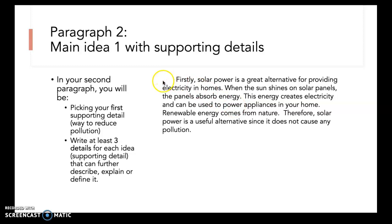For my second paragraph, I've also indented it and used a transition word. Firstly, solar power is a great alternative for providing electricity in homes. When the sun shines on solar panels, the panel absorbs energy. This energy creates electricity and can be used to power appliances in your home. Renewable energy comes from nature. Therefore, solar power is a useful alternative since it does not cause any pollution. I explained my first way of reducing pollution and gave information on how solar panels work, concluding that solar power does not cause any pollution.